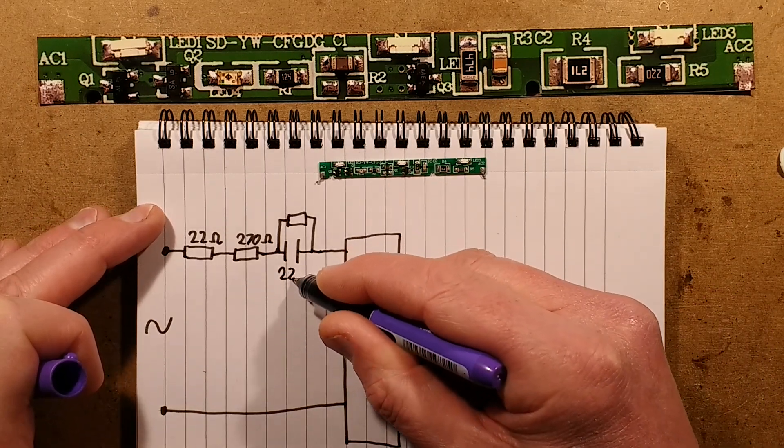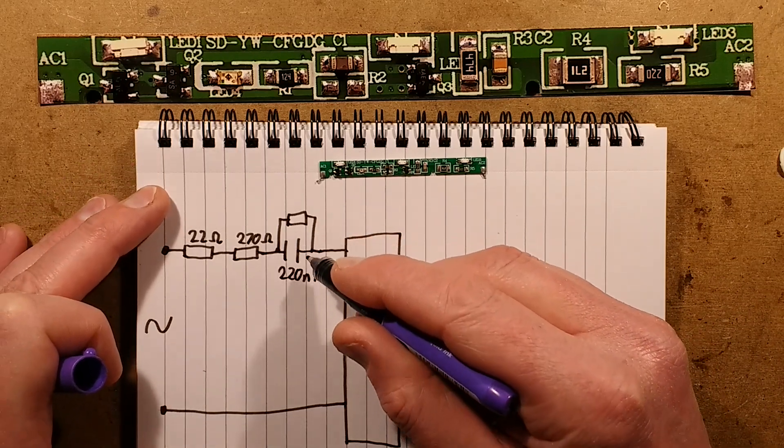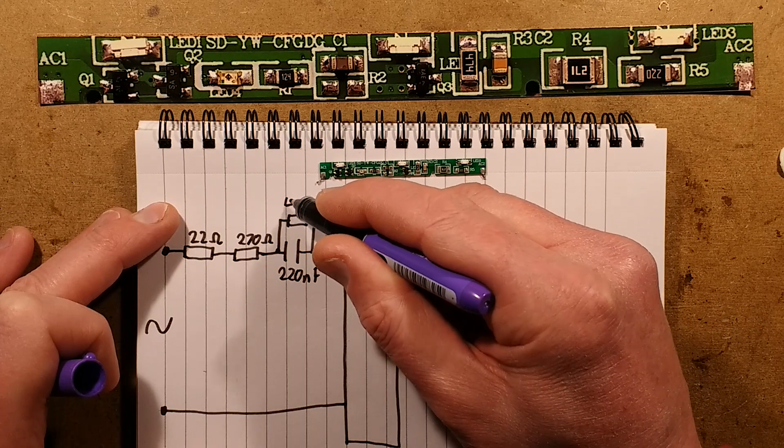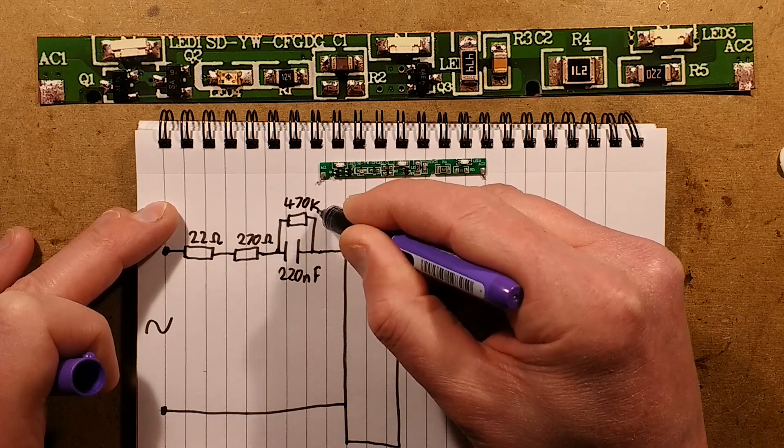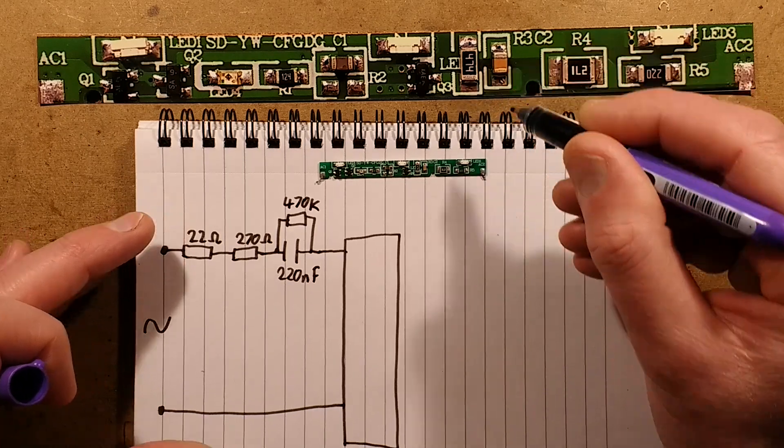Let's note those values. I reckon that capacitor, the closest value you can get from measuring it, is 220 nanofarad with a 470k resistor. That's 470,000 ohms.